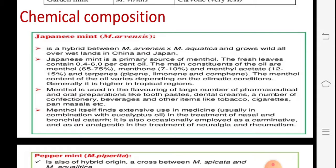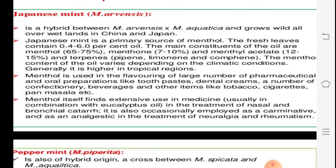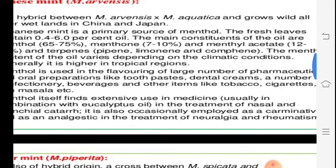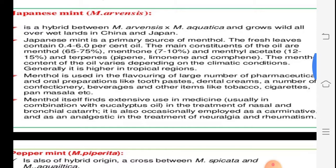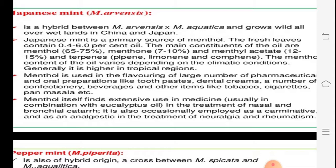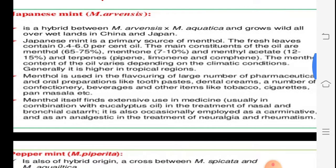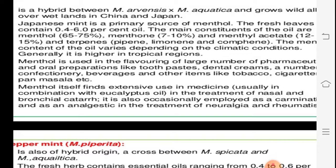Japanese mint is a hybrid between Mentha arvensis and Mentha aquatica, and grows wild in China and Japan. Fresh leaves yield 0.4–6% oil, with generally 65–70% menthol and 7–10% menthone. Menthol is mainly used as a flavoring agent in pharmaceuticals, toothpaste, dental creams, beverages, scented tobacco, cigarettes, and pan masala. In combination with eucalyptus oil, menthol is good for nasal and bronchial catarrh.